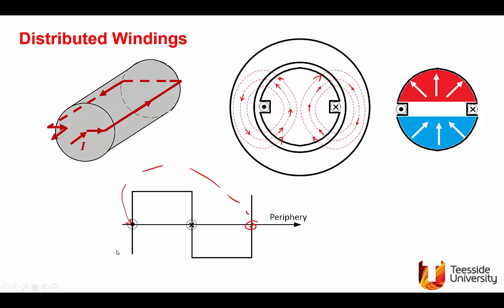Now, this is the magneto motive force and flux density distribution, and this will have a first fundamental and harmonics. Of course, if it's a wave as shown in the solid black, it will have high content of harmonics. We need to reduce that, so we need to play a bit with the shape of this waveform. And what do we do? Well,